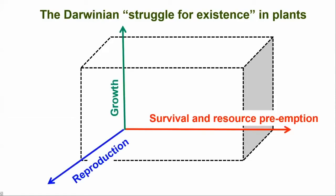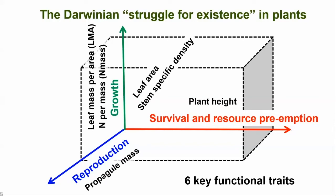We set out to describe essential axes of specialization at the level of the whole plant — growth, survival, and reproduction. In order to make this operational, we needed to find a minimum set of plant traits that together would encapsulate all these functions and at the same time would be available for a very large number of species worldwide. We finally settled for plant height, seed or spore mass, leaf mass per area, leaf nitrogen content, leaf lamina size, and stem specific density.